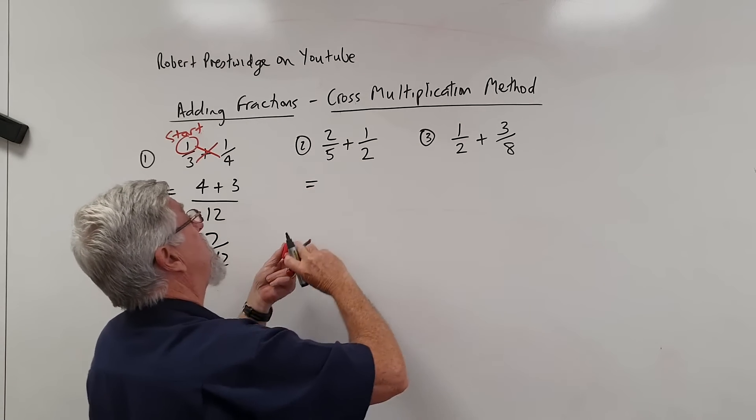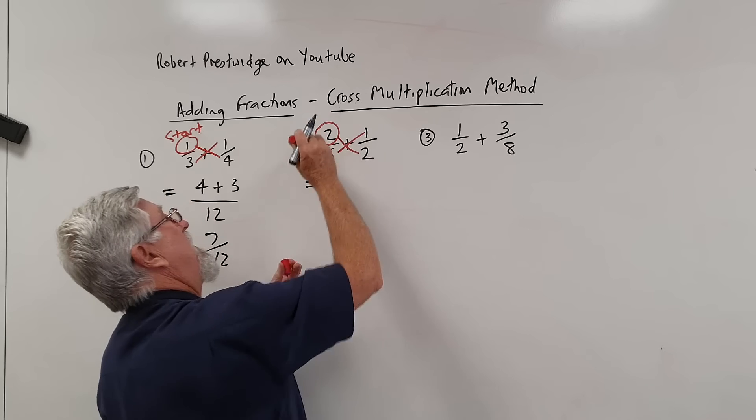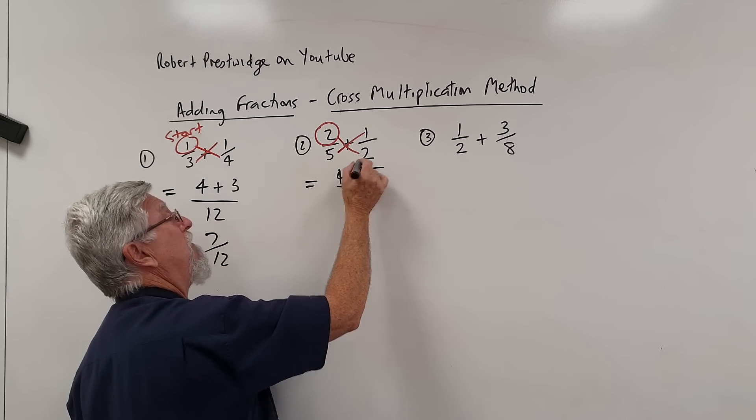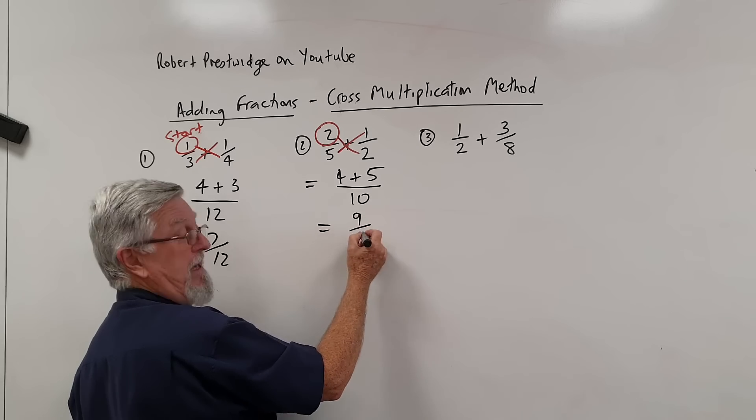Next one then, cross multiplication is there. We start here, start there. 2 twos are 4, 1 fives are 5, add them together, 5 twos are 10 and we've got 9 tenths.